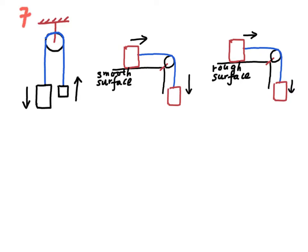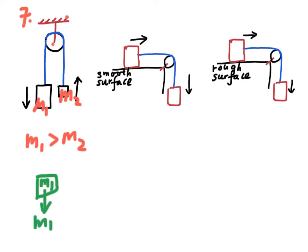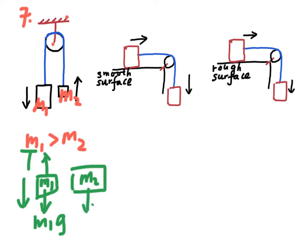In case seven, two blocks of mass M1 and M2, with M1 larger than M2, are connected by a string which passes over a pulley connected to the ceiling. The forces acting on M1 are its weight and the tension of the string. The forces acting on M2 are its weight and the tension of the string.